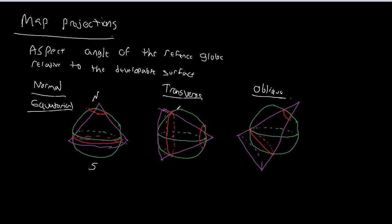And we're going to go through an example when we talk about the math behind it of something called the universal transverse Mercator or UTM, which is one of the most popular projections for local areas. So just to recap with aspect, that's the angle between the reference globe and the developable surface. If the developable surface runs north-south so that the standard lines are running along parallels, we call that the normal projection or the normal aspect or the equatorial aspect.